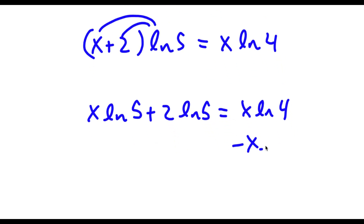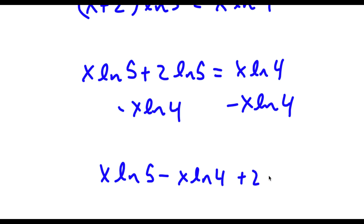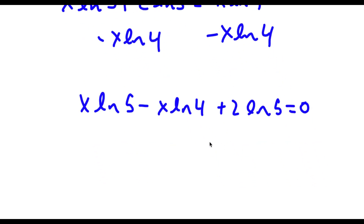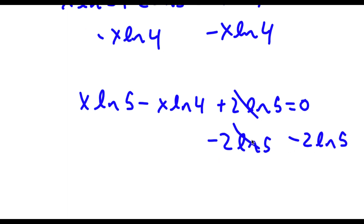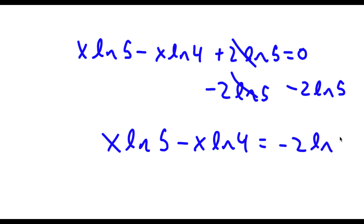Now I'm going to subtract both sides by x times ln 4. So now I have x times ln 5 minus x times ln 4 plus 2 times ln 5 is equal to 0. Now if I subtract 2 times ln 5 on both sides, these two cancel out. Now I'm left with x times ln 5 minus x times ln 4 is equal to negative 2 times ln 5.